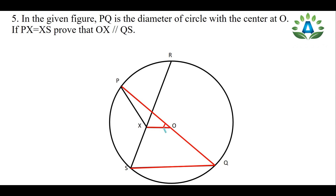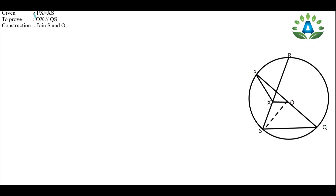To prove two lines are parallel, we need to show that corresponding angles are equal — that is, one angle equals another angle. Starting from the given information: PX equals XS, that is one line equals another line. So we also need to prove OX is parallel to QS.